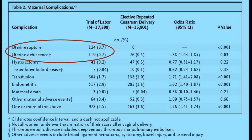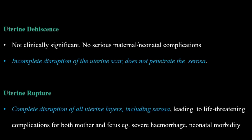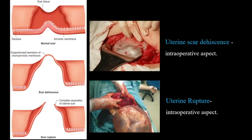There are two important terms: uterine rupture and uterine dehiscence. Uterine dehiscence is an incomplete disruption of the uterine scar that does not penetrate the serosa; it is not clinically significant, and the mother may or may not present with pain. Uterine rupture, however, is a complete disruption of all uterine layers including the serosa. This is life-threatening for both mother and baby, and patients often immediately collapse into hypovolemic shock.